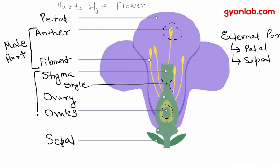And if you put together this entire structure, starting with the stigma, then you have the style, you have the ovary, and the ovules - this constitutes the female part of the flower.